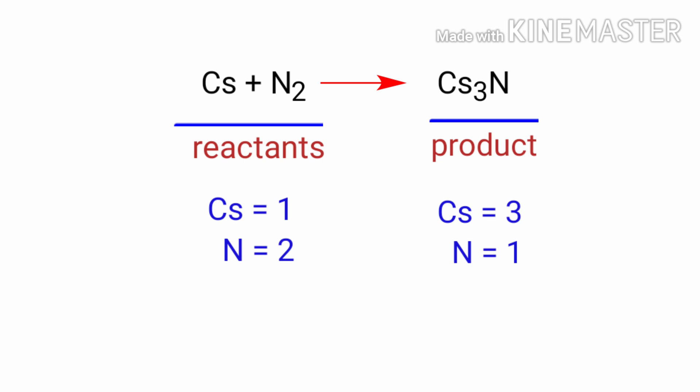In this equation, we need to balance the nitrogen atoms first. To do this, we need to put a coefficient of 2 in front of caesium nitride. The nitrogen atoms are balanced.